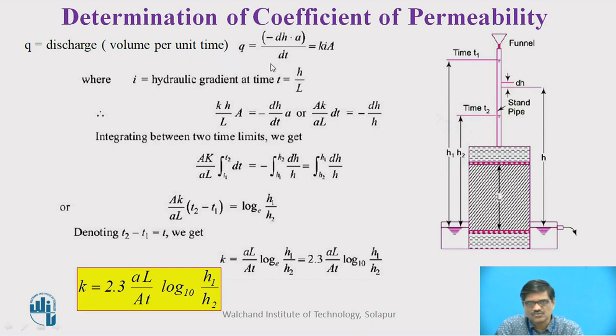This Q is also given as K into I into A, as we have seen in Darcy's equation. Q equals K into I into A. This volume per unit time, the discharge, can be equated to K into I into A. We can simplify this equation, where I is the hydraulic gradient. In this case, hydraulic gradient is H by L. H is the total head causing the flow and L is the length of the sample through which water is flowing.